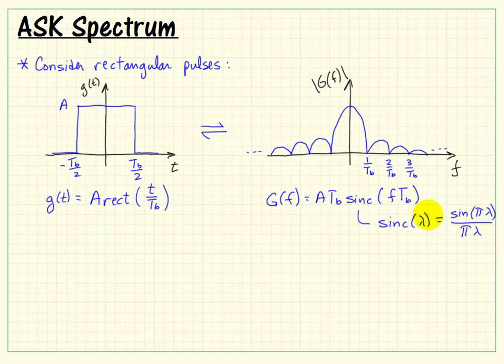The null points occur at reciprocals of the bit interval, and they occur at integer multiples of that. Our bit rate is the reciprocal of our bit period, so we could also think of these nulls as occurring at integer multiples of our bit rate.